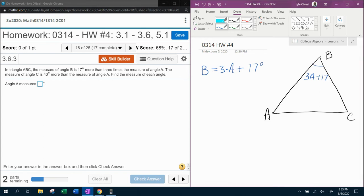Next, it says the measure of angle C is, so C is, remember is is equals, 43 degrees more than. What does more than mean? Add. It's going to be 43 degrees more than what? More than the measure of angle A. So the measure of angle C is 43 degrees more than A, and I feel good about that. Let's put that in the picture. A plus 43, that's the measure of angle C.